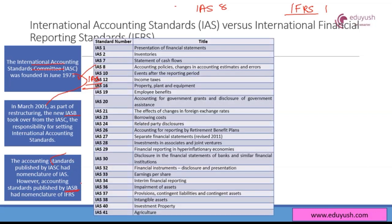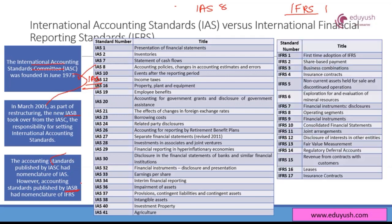Today we have all these accounting standards. The initial ones — IAS 1 to IAS 41, with some numbers missing in between — are the live standards today. They are still there, still not changed, as they are.